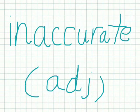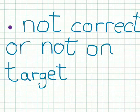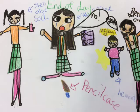Inaccurate! Today's word is inaccurate. Inaccurate is an adjective that means not correct or not on target. On the test, many of my answers were inaccurate so I got a bad grade.